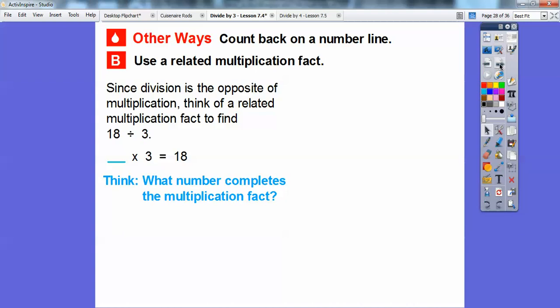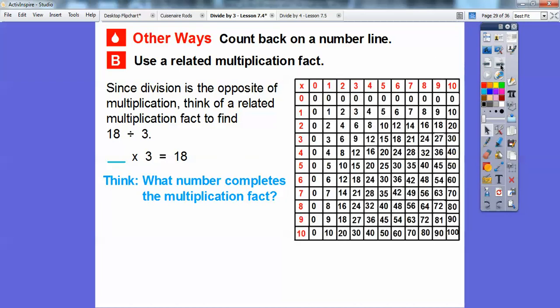Another way is to use a related multiplication fact. Since division is the opposite of multiplication, think of the related multiplication fact of 18 divided by 3. So this is saying, what number times this 3 will equal this 18? So what number completes that? So we can go ahead and use the multiplication chart, go up here to 3, scroll down to 18, and then find what number it is when you scroll over to the left.